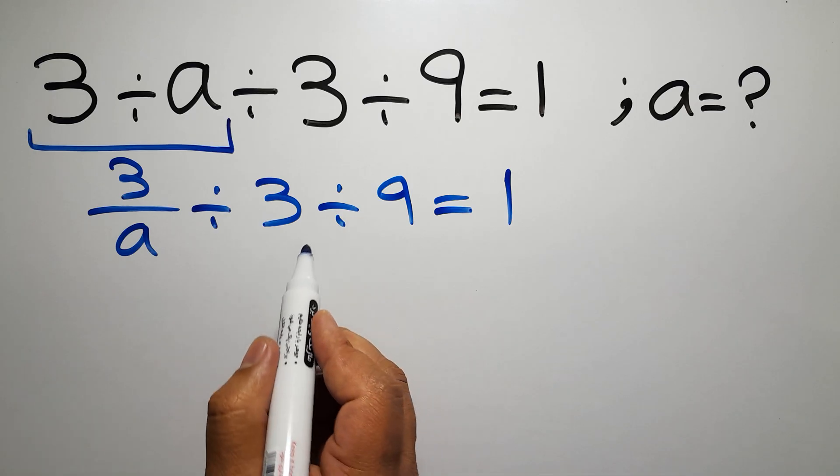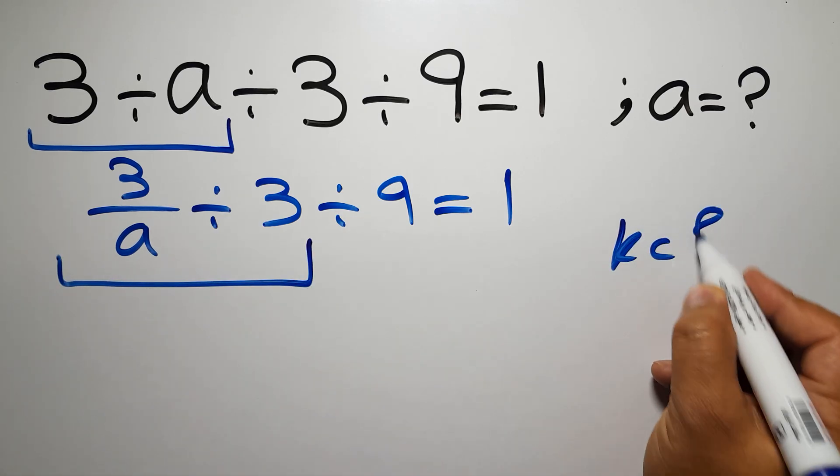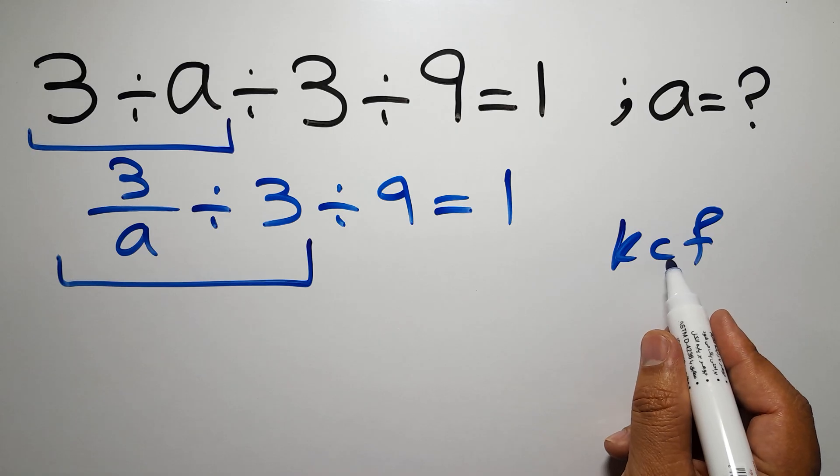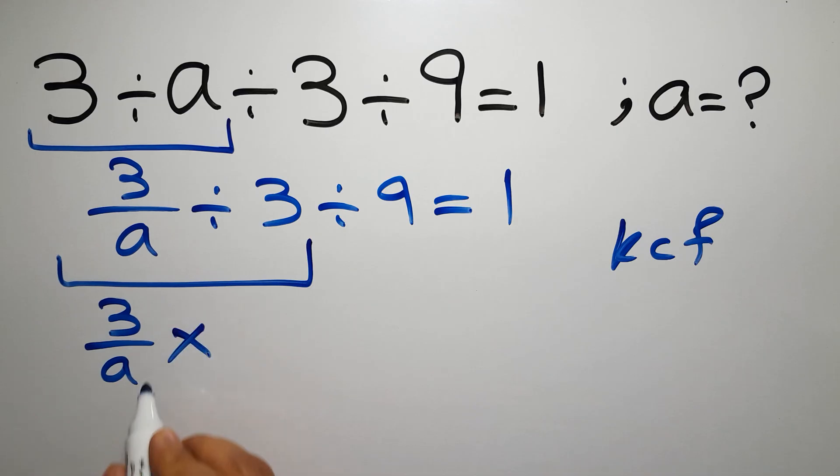According to the KCF rule, K stands for keep, C stands for change, and F stands for flip. Keep the first fraction, change the division to multiplication, and flip the second fraction. So we have 3 over a times 1 over 3.